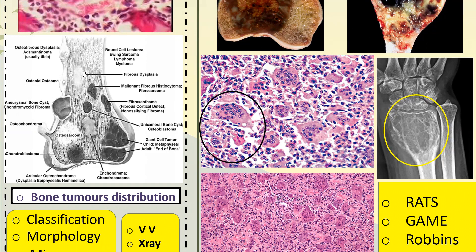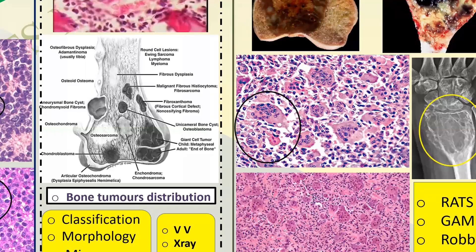A diagram shows the epiphysis, diaphysis, and metaphysis. In the metaphysis, Ewing sarcoma occurs. In the diaphysis, there can be a tumor such as osteosarcoma. And the giant cell tumor occurs at the epiphysis. There are also other tumors which can have giant cells, such as an aneurysmal bone cyst or a chondroblastoma.